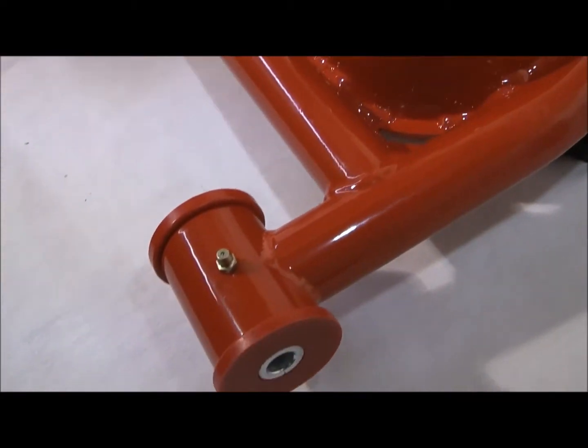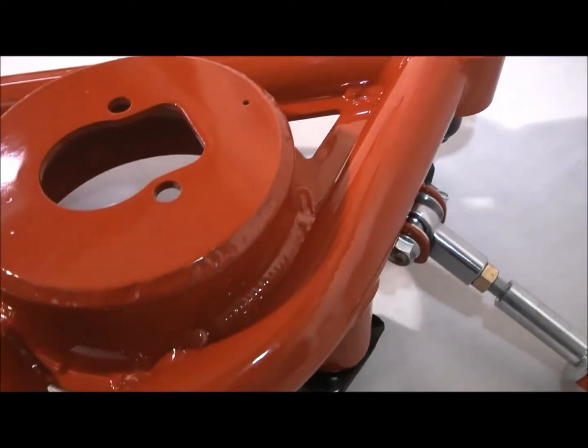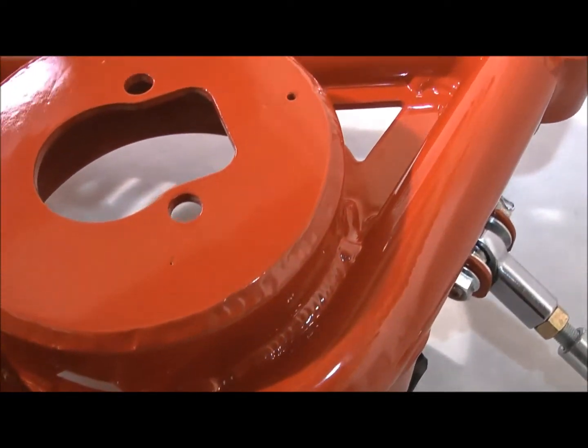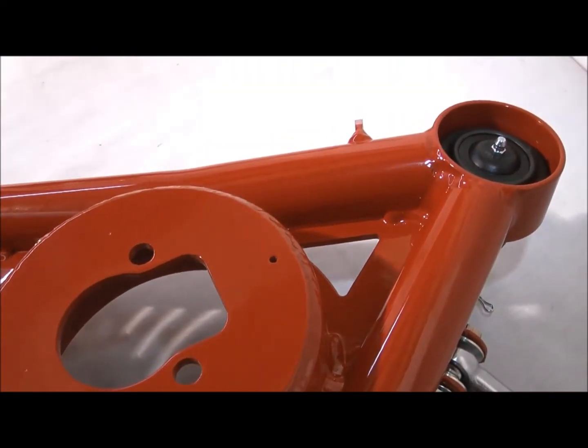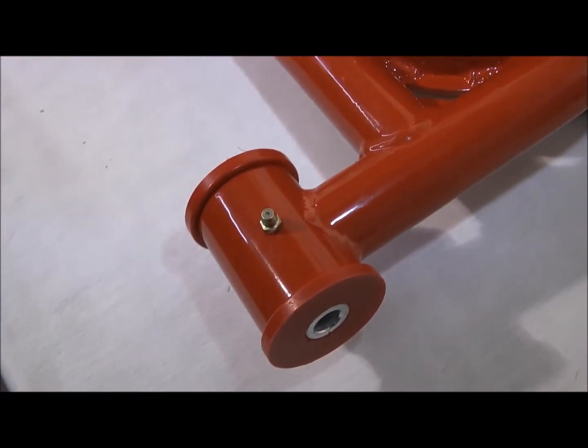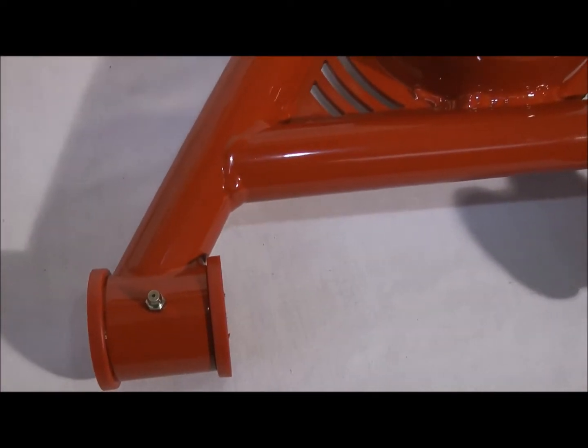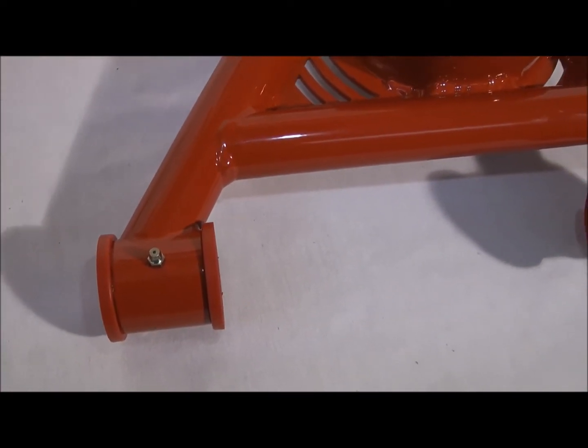These are heavy duty. If you're looking for an A-arm with no flex, it's going to plant them front tires, you're looking at them right here. Grease fittings for the bushings, they're sticking out the bottom so you can grease them really easy right on the car.